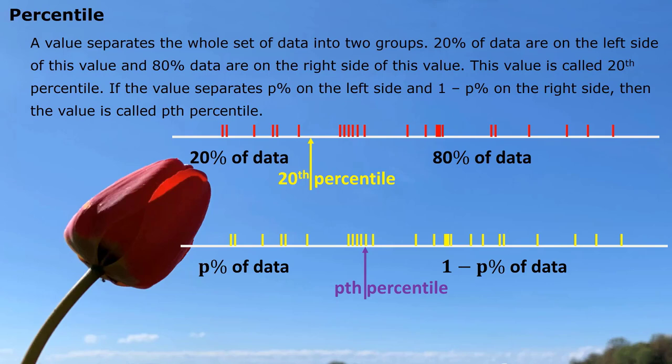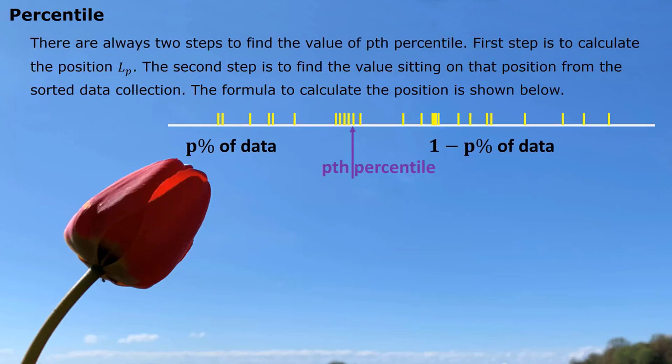We just have the different percentage on each side. There are always two steps to find the value of pth percentile. First step is to calculate the position LP, which means where the pth percentile is located. And then second step is to find the value sitting on that position from the sorted data collection. The formula to calculate the position is shown below.